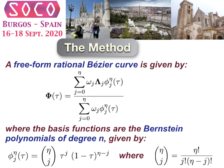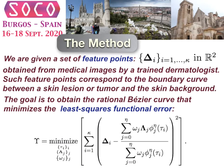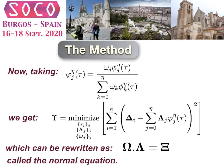Our approach is to consider a free-form rational Bezier curve, given by these equations. Given a set of feature points — assumed to be obtained by a trained dermatologist from points separating the lesion from the skin background — the goal is to obtain the rational curve minimizing the least-squares functional error given by this equation, which means performing data fitting to identify the border curve. This involves solving the normal equations, as detailed in the paper.